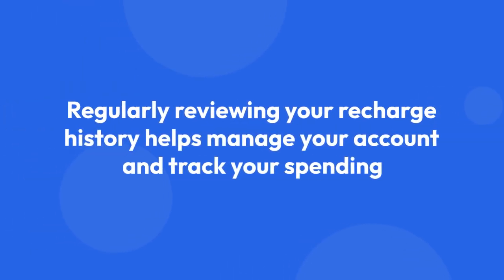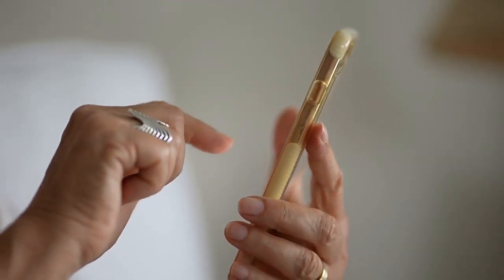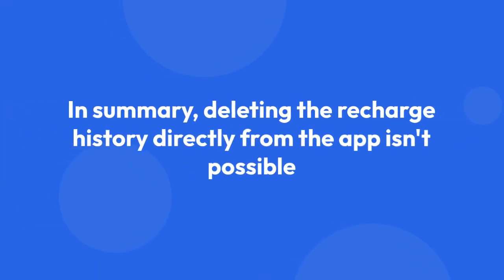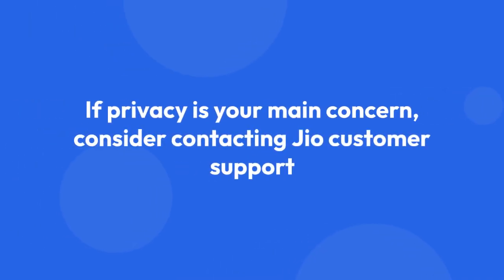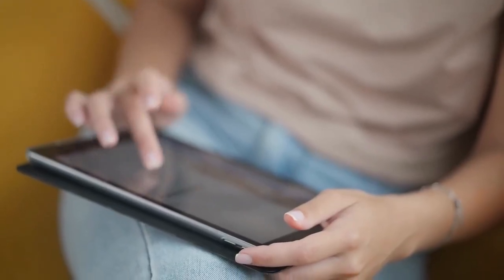Regularly reviewing your recharge history helps manage your account and track your spending. While you can't technically erase it, you can control how much you access and engage with it. In summary, deleting the recharge history directly from the app isn't possible. The best approach is to simply not look at the past recharges if you don't need to review them. If privacy is your main concern, consider contacting Geo customer support to explore what options, if any, might be available. Remember that this information is kept for accounting and service purposes.